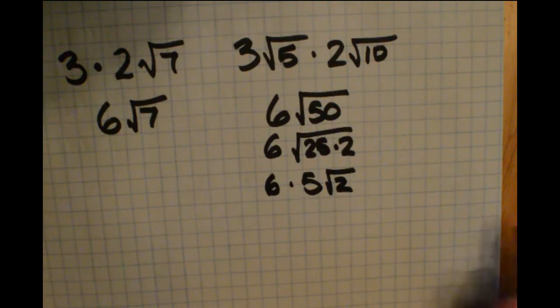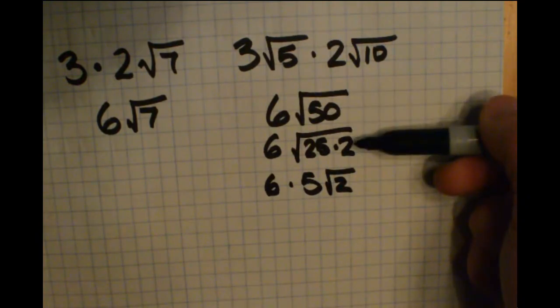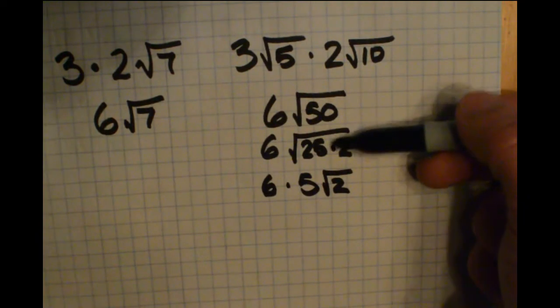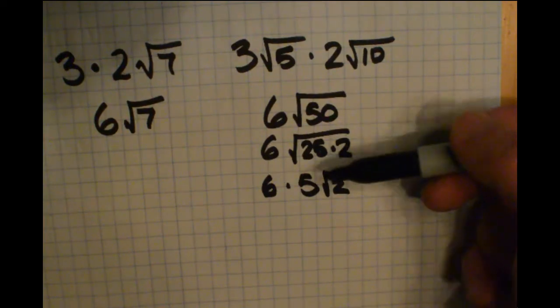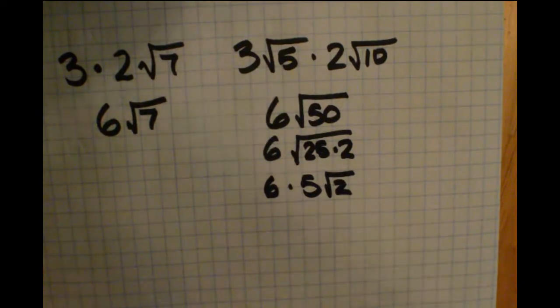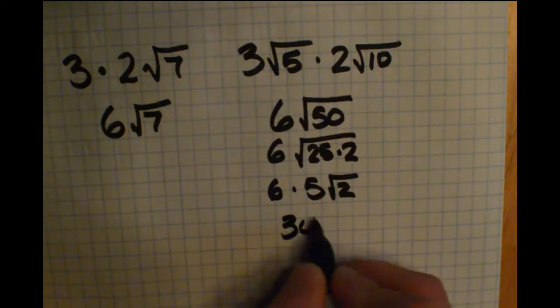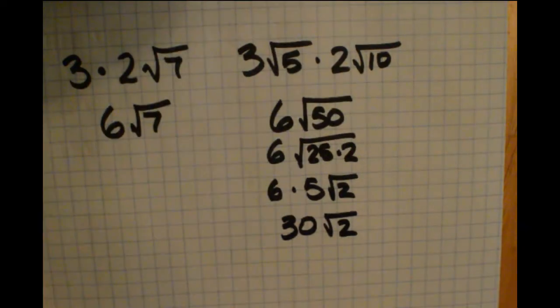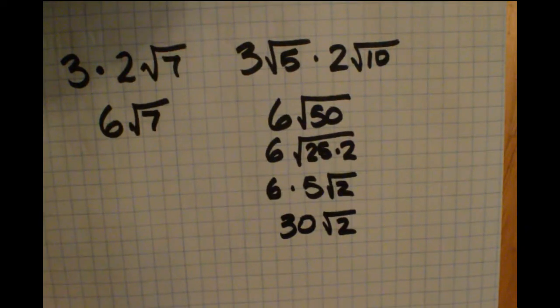We'll bring down the 6. We broke that down to 25 times 2, took the square root of 25 to get 5, and now we have 6 times 5 radical 2. The 6 and the 5 are both outside of the radical, so we multiply those together to get 30. The radical 2 stays in, so we have 30 radical 2.